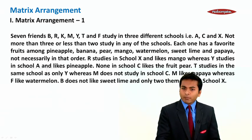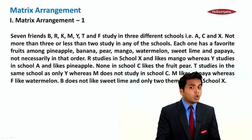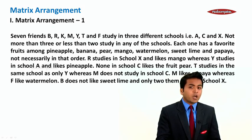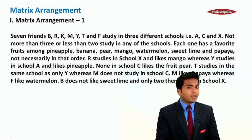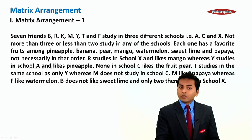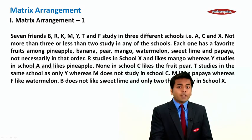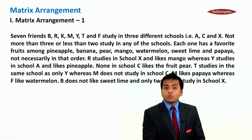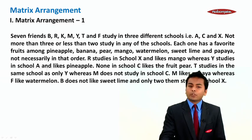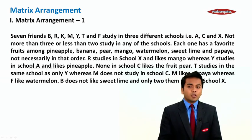Seven friends B, R, K, M, Y, T, and F study in three different schools: A, C, and X. Not more than three or less than two study in any school. Each one has a favorite fruit among pineapple, papaya, banana, pear, mango, watermelon, and sweet lime. R studies in school X and likes mango, Y studies in school A and likes pineapple. No one in school C likes pear. T studies in the same school as only Y. M does not study in school C and likes papaya, F likes watermelon, and B does not like sweet lime.